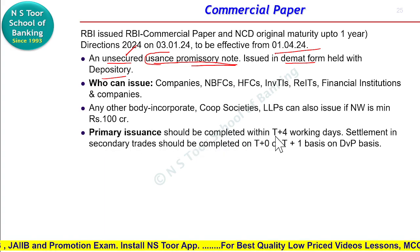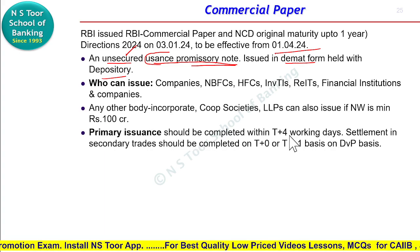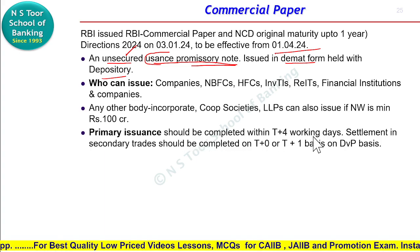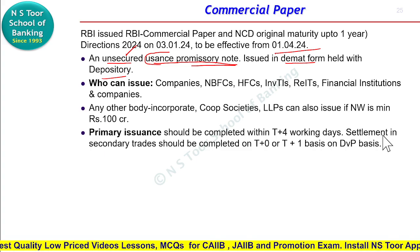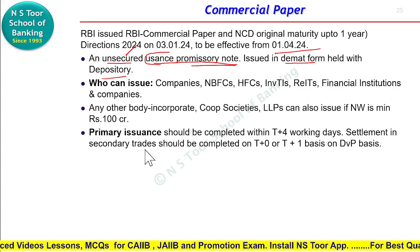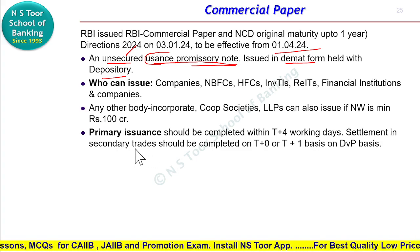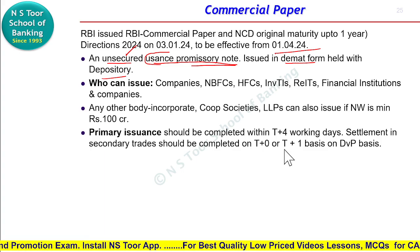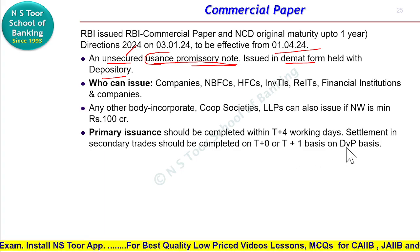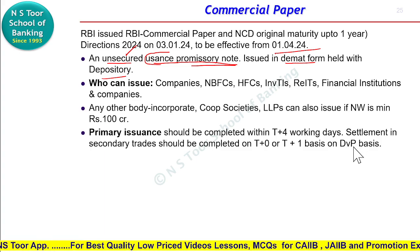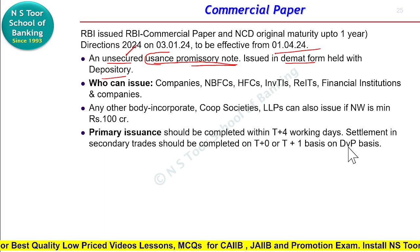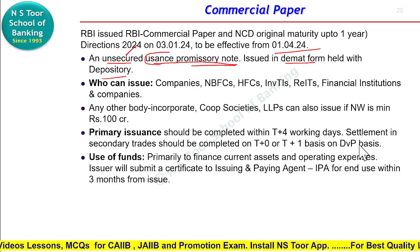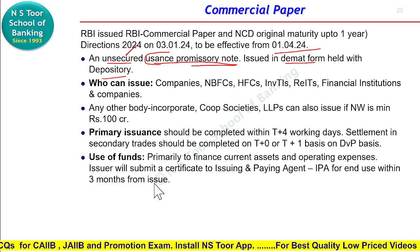Jab primary issue hoga to primary issue within T plus 4 working days mein complete ho jana chahiye — yani jis din ye issue open hua, uske plus 4 days ke beech mein iska subscription pura ho jana chahiye. Jo settlement hai secondary trades ka — jab isko subsequently issue ke baad sale-purchase kiya jayega, jisko hum kehte hain secondary trade — that settlement should be completed on T0 or T plus 1 basis, aur isme use kiya jayega delivery versus payment system.